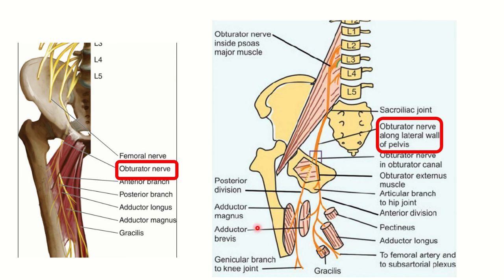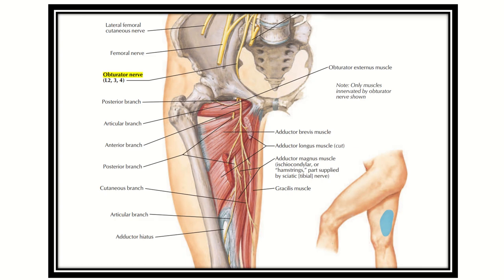Looking at the diagram, we can identify five key muscles: adductor magnus, adductor brevis, adductor longus, gracilis, and pectineus. There is also the obturator externus. So these six muscles — adductor magnus, adductor brevis, adductor longus, gracilis, pectineus, and obturator externus — are all supplied by the obturator nerve.